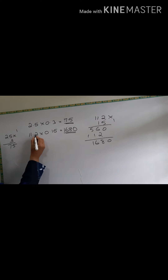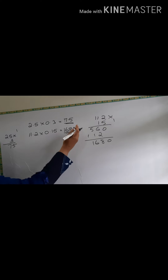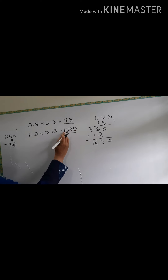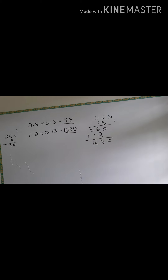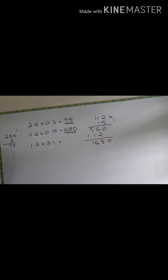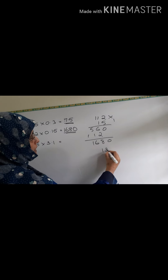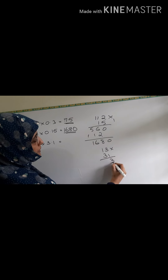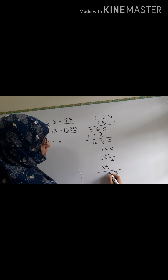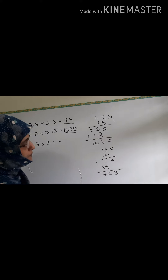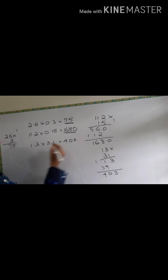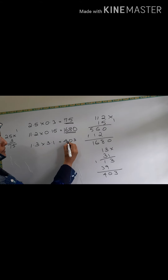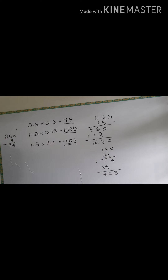Count the total number of digits after the decimal in the given numbers. Then start from the right side, count that many digits and put the decimal. Next: 1.3 into 3.1. Multiply 13 into 31, which is 403. Here also one digit after decimal and here also one digit, so total 2. The answer is 4.03.